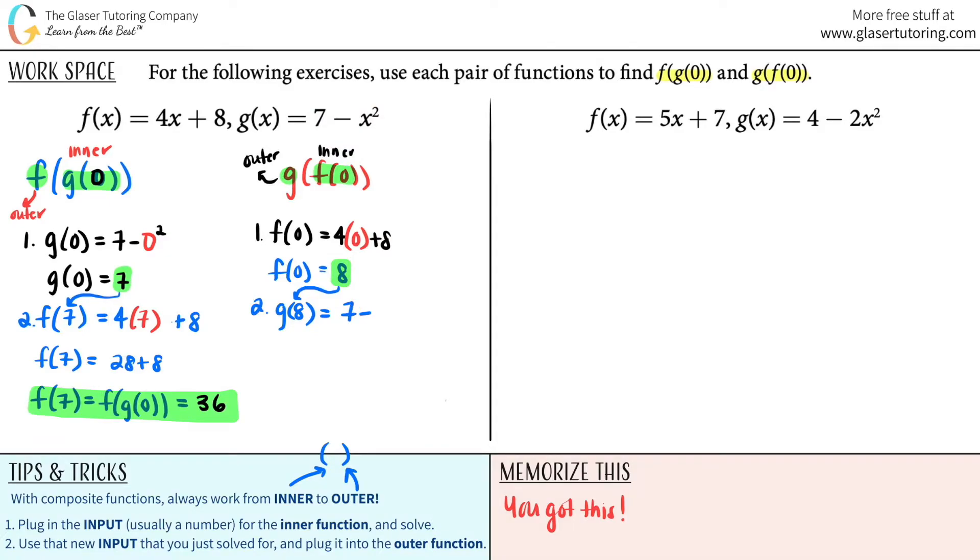So 7 minus, okay, here's an 8. And then I got to square that. So 8 squared is 64. So I can say that g of 8 equals 7 minus 64. And then just plug it in, 7 minus 64, just to make sure that I got my math right, negative 57. So we can say g of 8, which is the same thing as g of f of 0, is negative 57. And there you go.